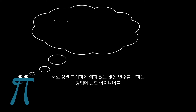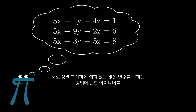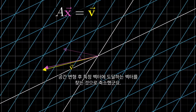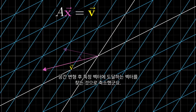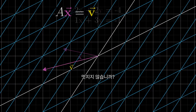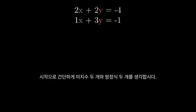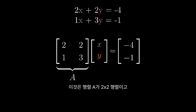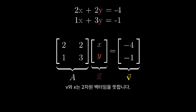Think about what's happening here for a moment. You can hold in your head this really complicated idea of multiple variables all intermingling with each other, just by thinking about squishing and morphing space and trying to figure out which vector lands on another. To start simple, let's say you have a system with two equations and two unknowns. This means the matrix A is a two-by-two matrix, and v and x are each two-dimensional vectors.